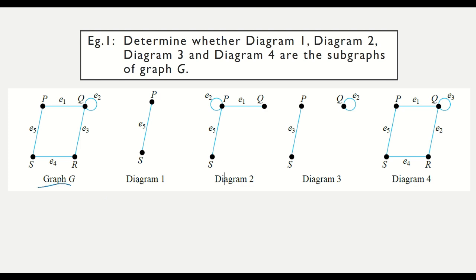Looking at Diagram 1 — remember the vertices and edges remain the same. P and S are in the same position as graph G, and the edges are also the same, meaning this is a subgraph of graph G.